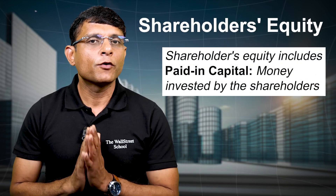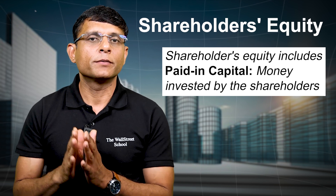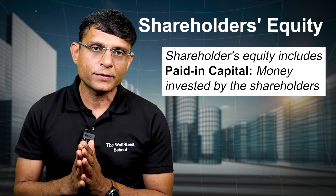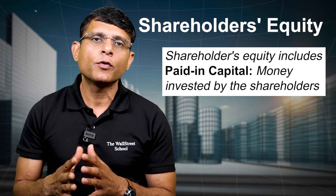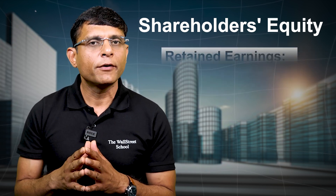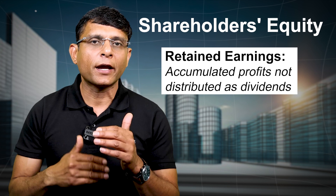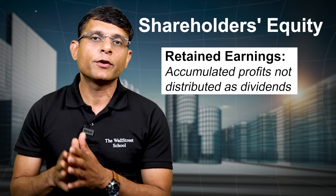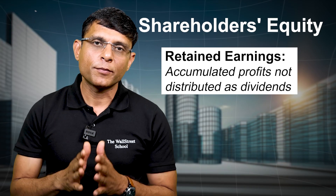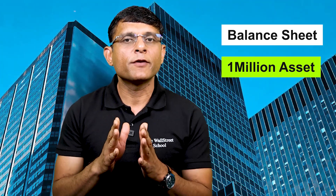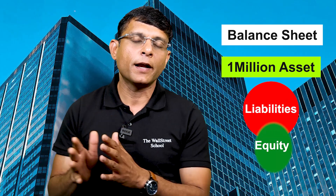Shareholders' equity includes paid-in capital — money invested by shareholders when they started the business — and retained earnings, which is accumulated profit not distributed as dividends over time. So shareholders' equity is the sum of capital invested initially plus profits earned and not distributed as dividends. Importantly, the balance sheet must always balance — hence the name. If the company has $1 million in assets, it must have exactly $1 million in the combined liabilities and equity.